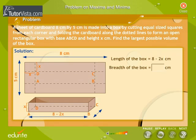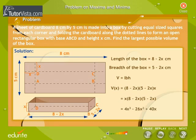Find the breadth of the box. Volume of the box is equal to length into breadth into height. Substituting the values for L, B and H, we get volume is equal to 4x cubed minus 26x squared plus 40x.